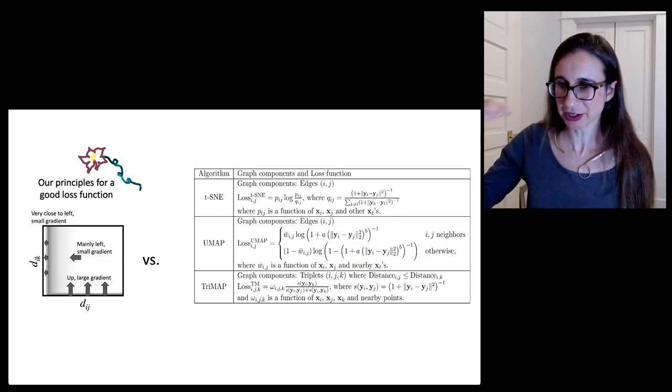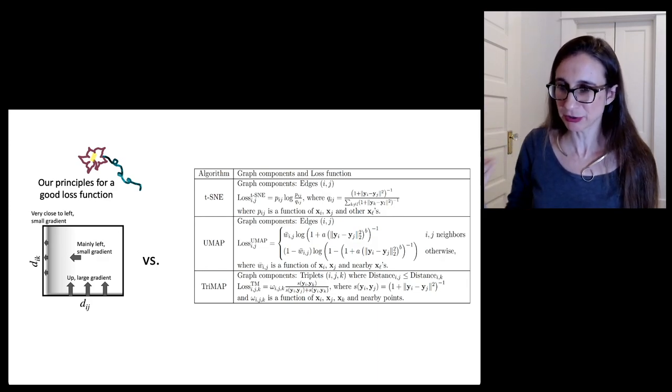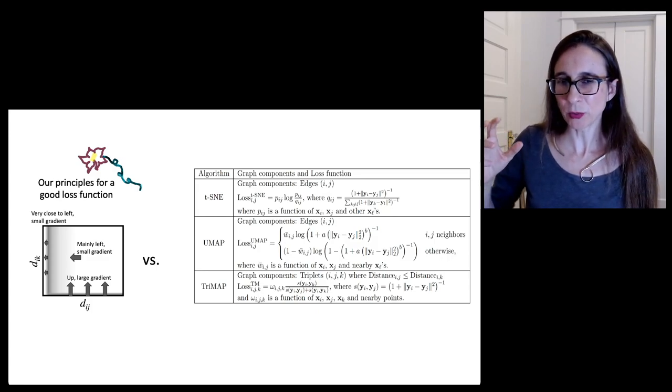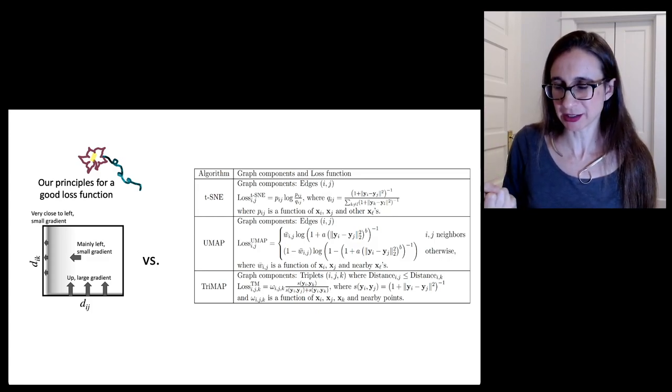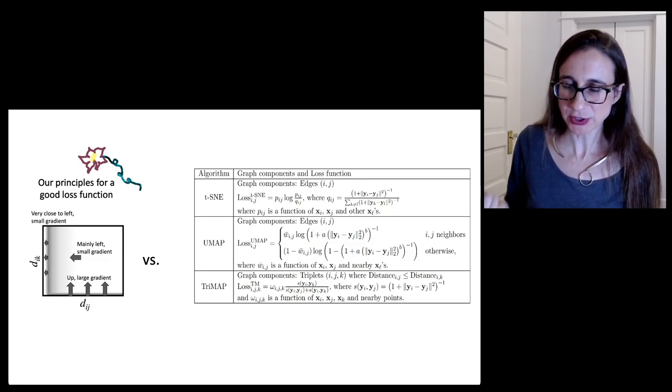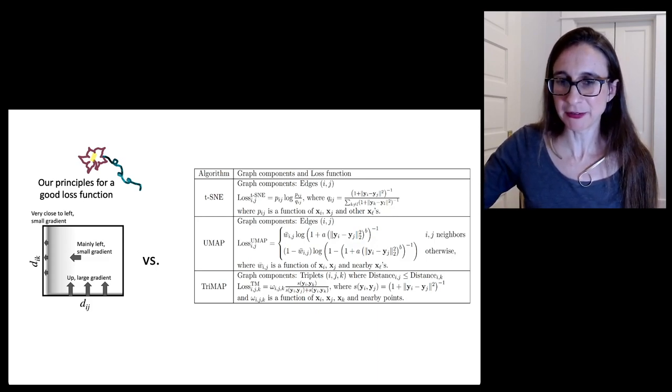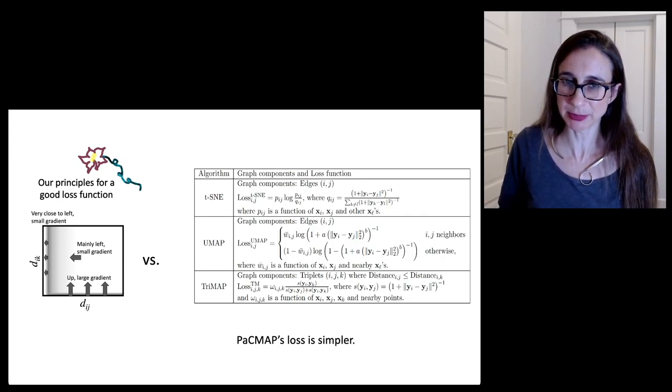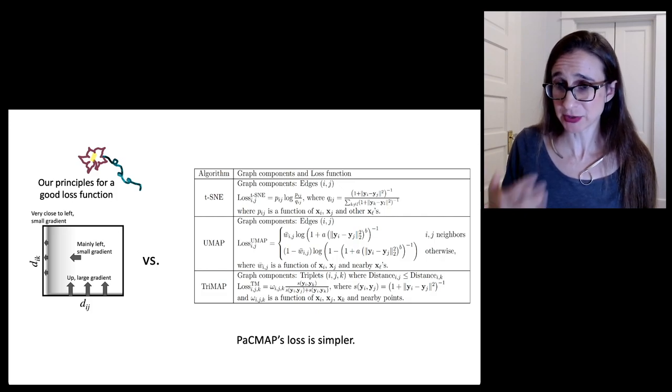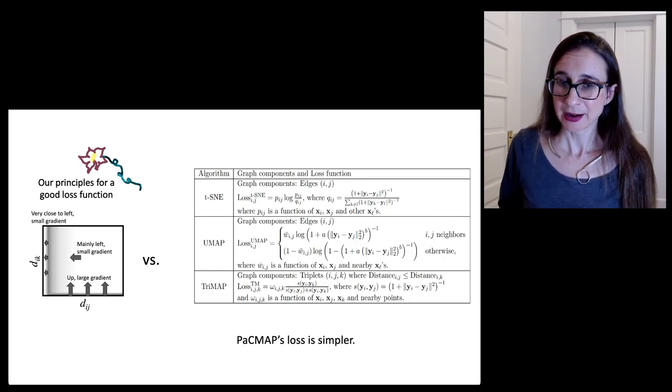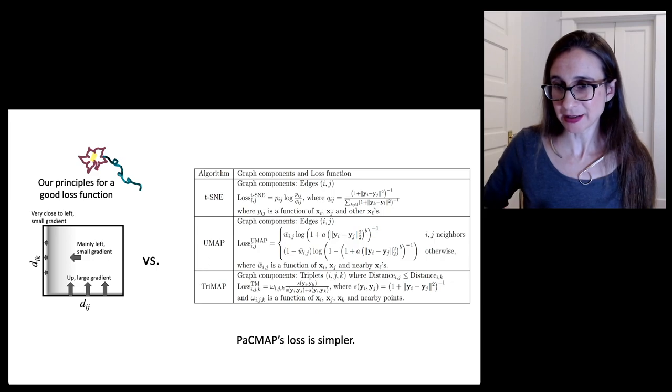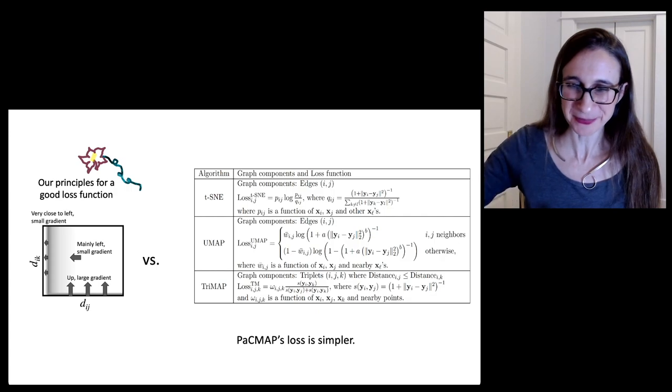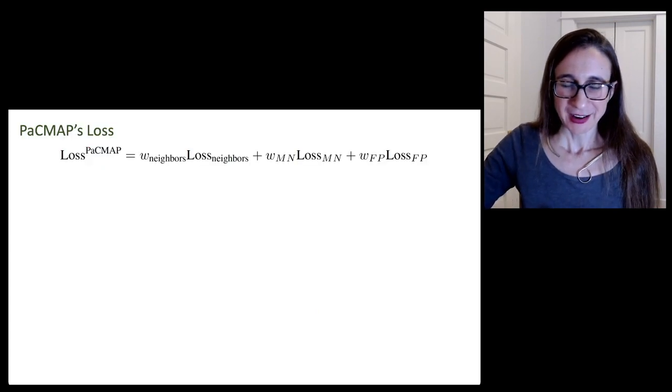We created a set of principles that govern good loss functions. I'm just showing you a figure here, but there's all these principles that are actually laid out in the paper, one, two, three, four, five, six, that show you what are the properties that make these loss functions really tick. Because we understood that we were able to develop a very simple loss function for PacMap. It's much simpler than any of the other loss functions for t-SNE and UMAP and TriMap, and it performs just as well and sometimes better.